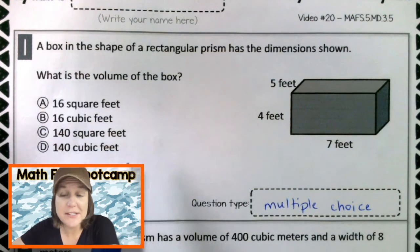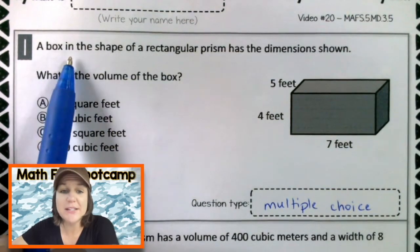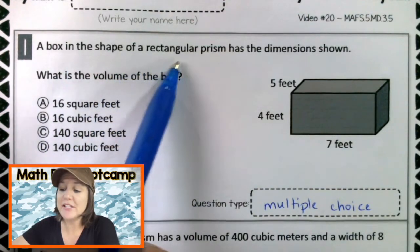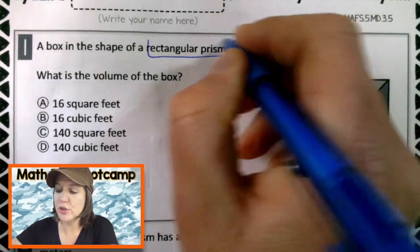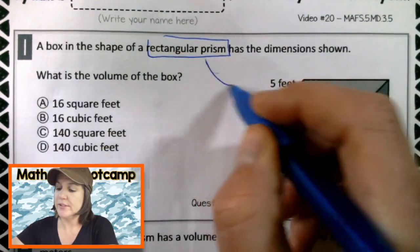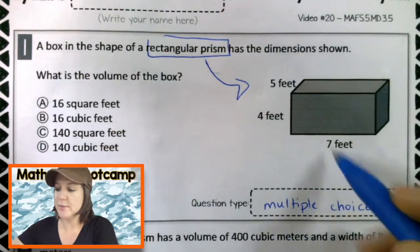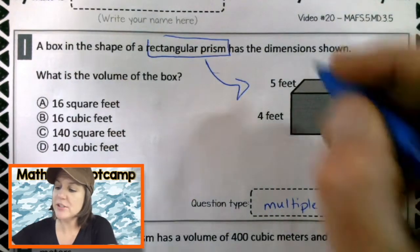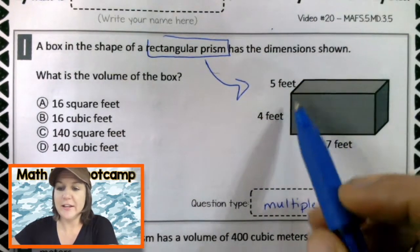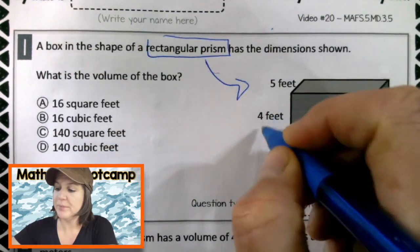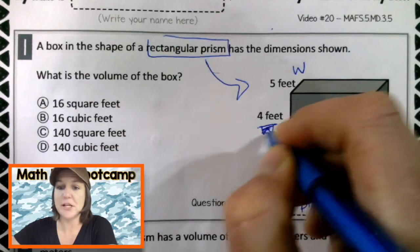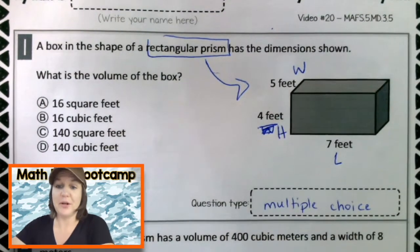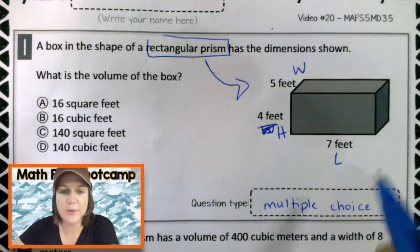Mark up our text, and make sense of the problem. So it says a box in the shape of a rectangular prism has the dimension shown. Okay. So this is the rectangular prism right down here. And dimensions are the, are like the, the length, the width, the width. I messed up because this is the height. Alright. These are the dimensions of the box.